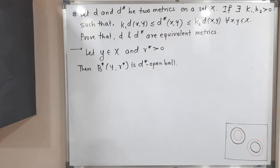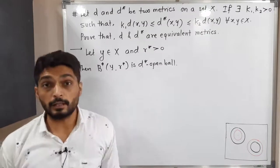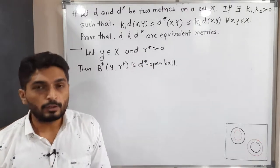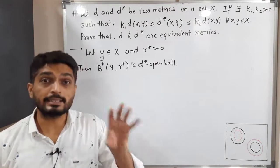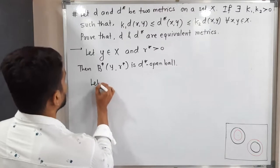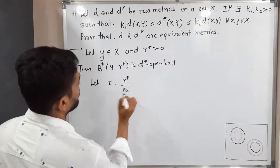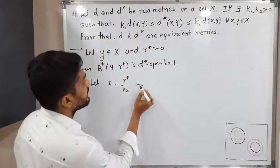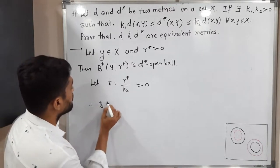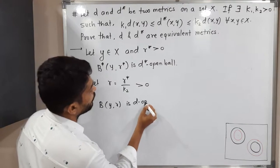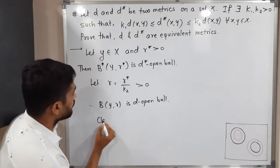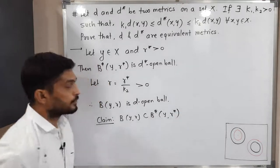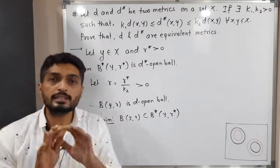Consider a d*-open ball B*(y, r*), where y is any point of X and r* is any positive real number. We need to find a d-open ball which lies inside this d*-open ball. Let r = r*/k2. Since k2 is a positive real number, the denominator is greater than zero, and r is also greater than zero. Therefore B(y, r) is a d-open ball, and we need to prove that this d-open ball is a subset of the d*-open ball.